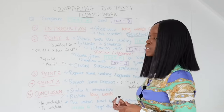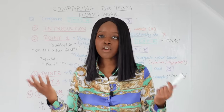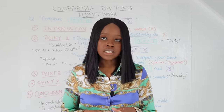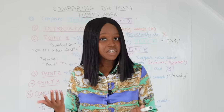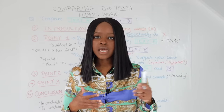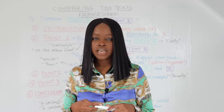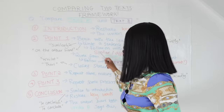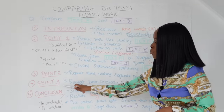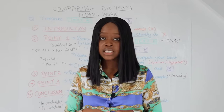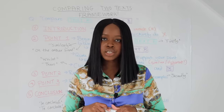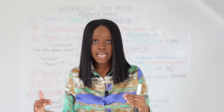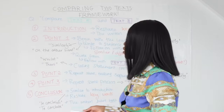You then repeat the process with a separate point. For example, going back to Sonnet 116 and Remember: if your first point was about how love is presented as something to be cherished versus something that can fade, your second point could be about how the speaker in Sonnet 116 argues love should be forgiving of misdeeds, whilst the speaker in Remember could be argued to show love as unforgiving. Try to make at least three points to show a broad and deep understanding of both texts.